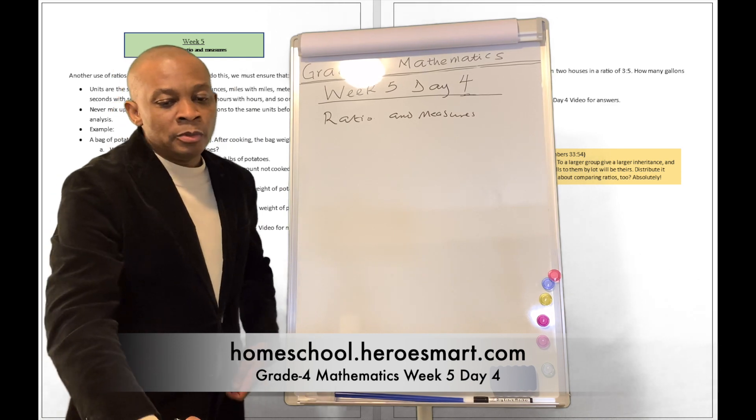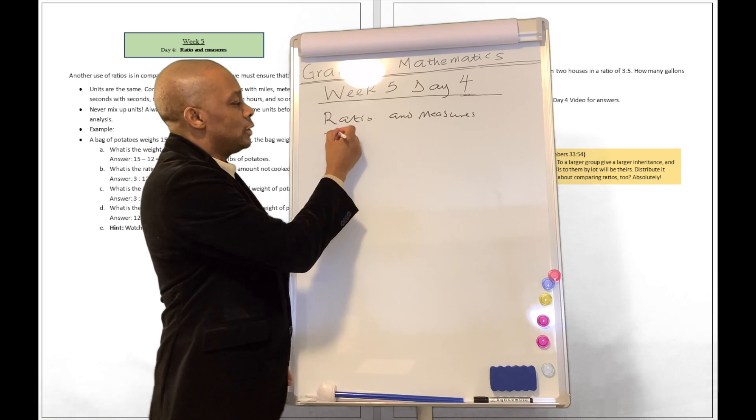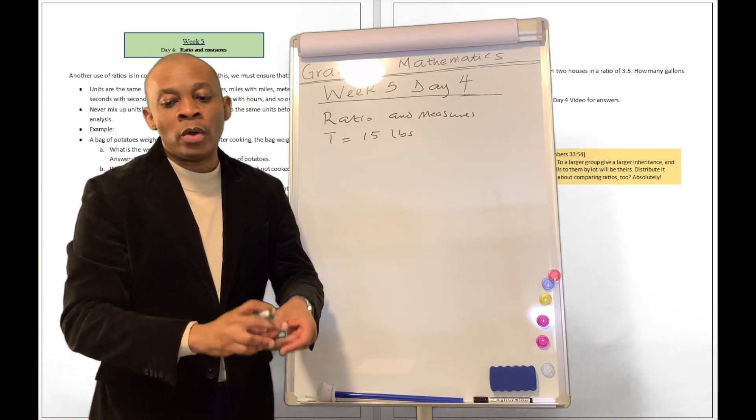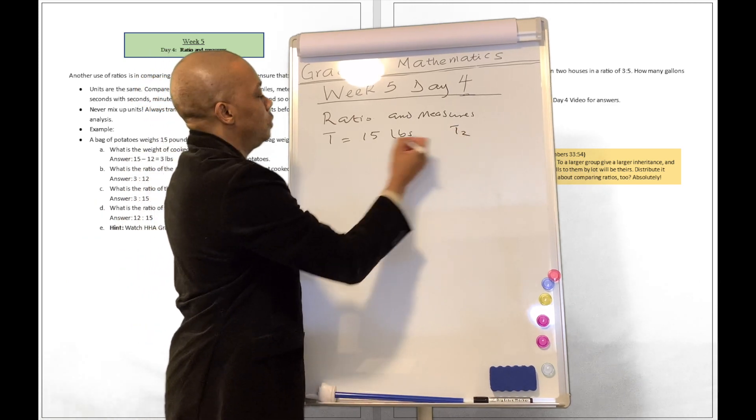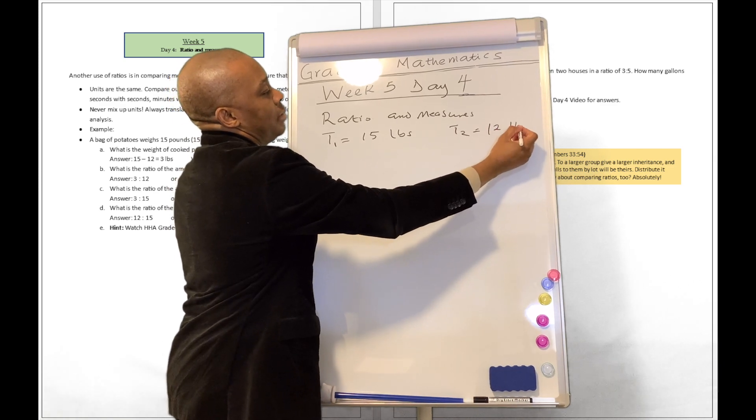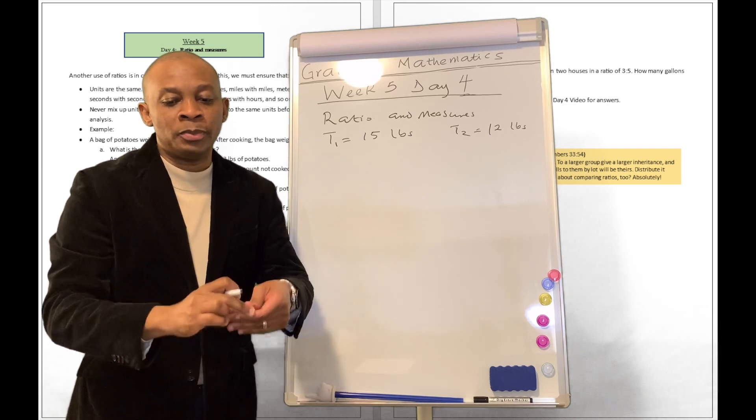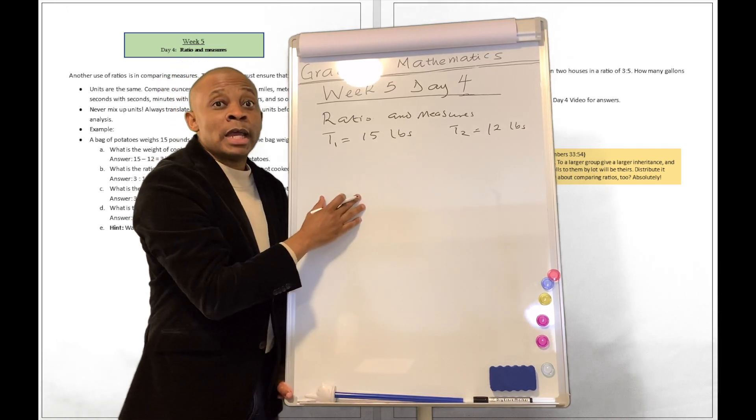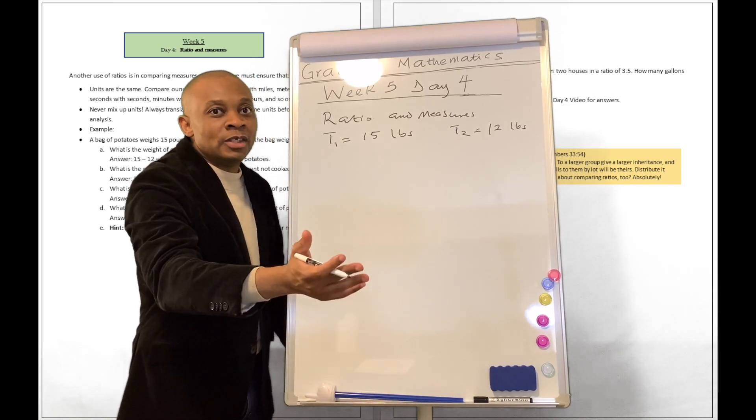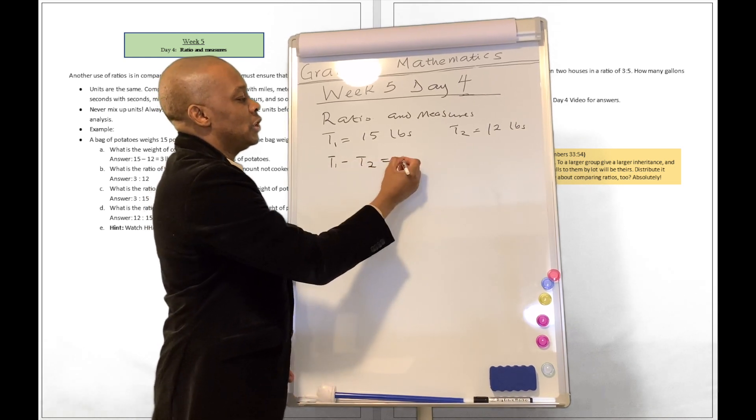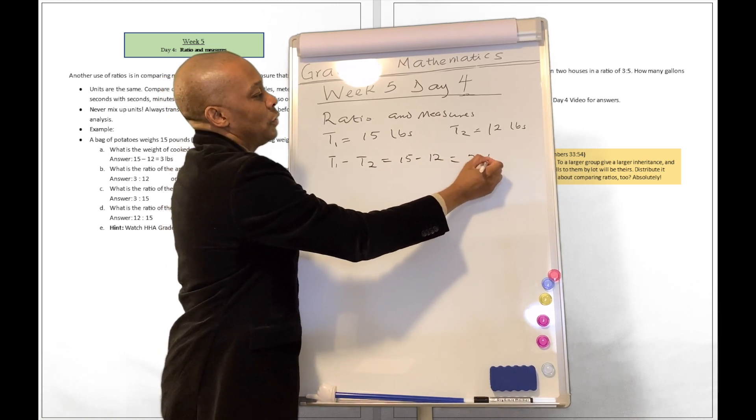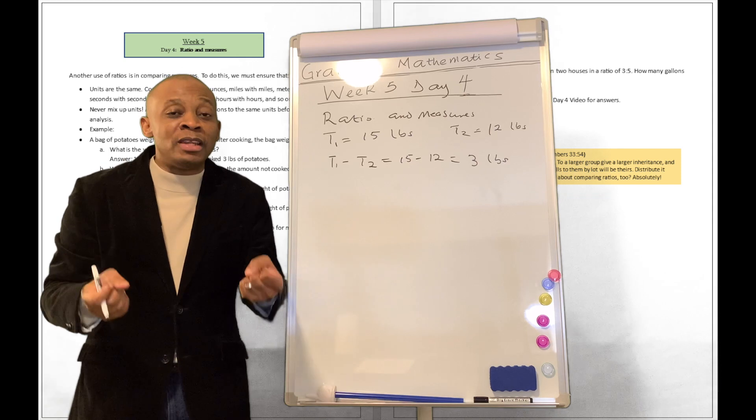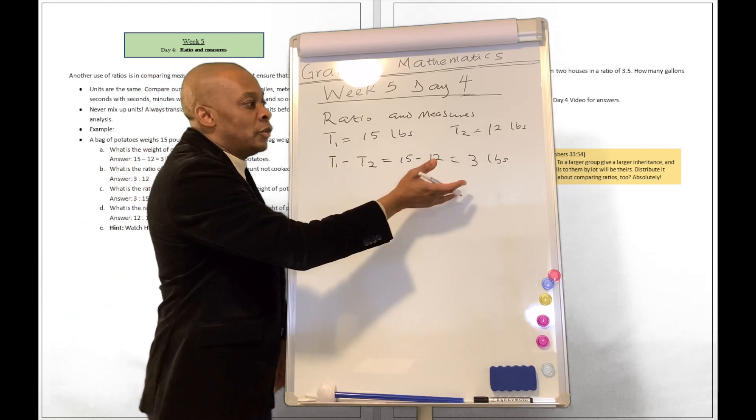A bag of potatoes weighs 15 pounds. So that's the total weight equals 15 pounds, LBS. After cooking, the bag weighs 12 pounds. So you can say T2, this is T1, T2 equals 12 LBS. What is the weight of cooked potatoes? Well, the bag was 15 pounds. After cooking, the bag still weighs 12 pounds. So how many pounds did we cook? That's going to be T1 minus T2, which is 15 minus 12, which is equivalent to 3 pounds.